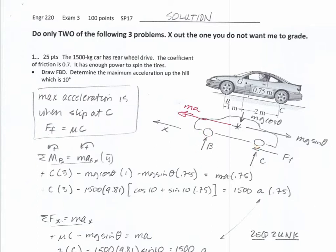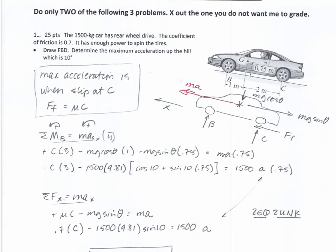Next is the free body diagram. It's important to draw normal forces and mg. Here I have two components of mg: mg cosine theta coming into the hill and mg sine theta going downhill. Those directions are important. The force of friction should be applied at the place where it occurs, so draw the arrow going forward at the rear wheel tire. It goes forward because it's causing the acceleration in that direction. Draw all those pieces on the free body diagram so you won't forget them when writing equations.